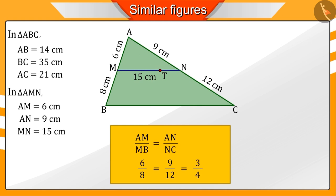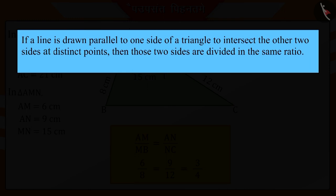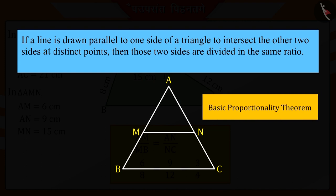Based on this activity, we can say that if a line is drawn parallel to one side of a triangle to intersect the other two sides at distinct points, these two sides are divided in the same ratio. And this is known as the basic proportionality theorem.